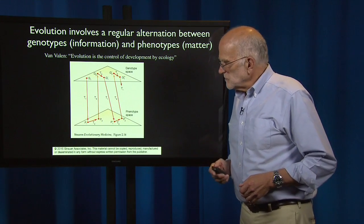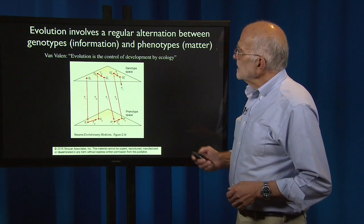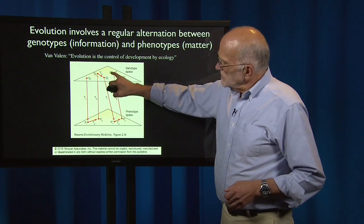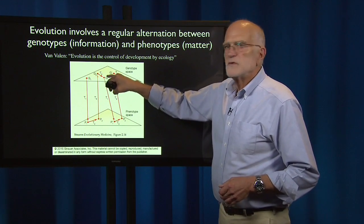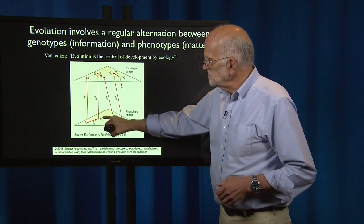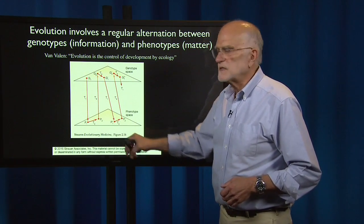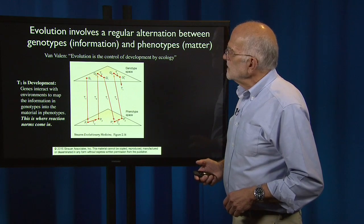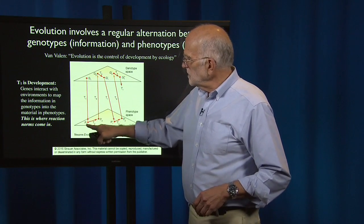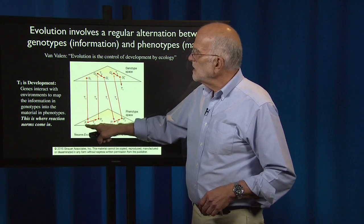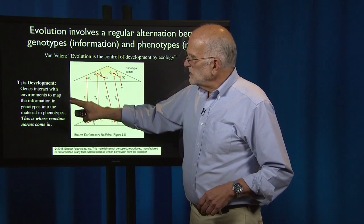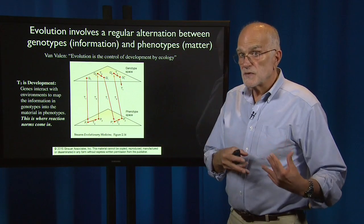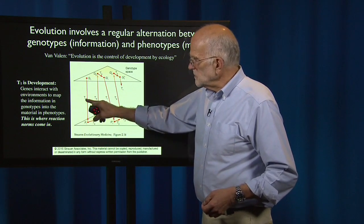This picture, originally sketched by Dick Lewontin, shows a regular alternation between genotype space and phenotype space. Think of genotype space as the universe in which DNA sequences exist, and phenotype space as the universe in which organisms exist. They are connected to each other. The first transformation, T1, from genotype to phenotype, is development — where genes interact with environments to map the information in genotypes into the material in phenotypes. That's where reaction norms come in.